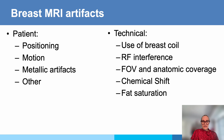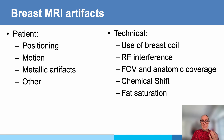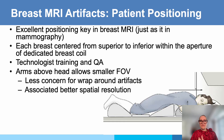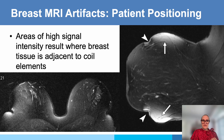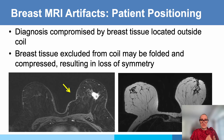Patient positioning has been fully covered in the first video, and I will touch upon what happens if we do not have optimal imaging. If positioning is not done optimally, you have areas of high signal intensity resulting when breast tissue is adjacent to coil elements — we want to avoid that because it impedes interpretation in those areas.